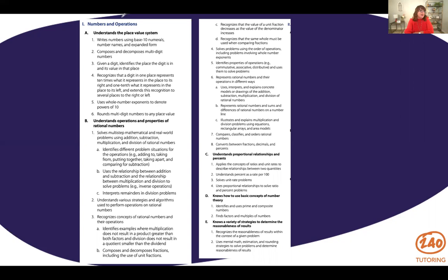Here we're looking at the first standard numbers and operations, and we're looking at all the components. Now what's nice about Praxis for this elementary ed exam is they really explain to you what those standards mean. So we can break that down into 1A understands the place value system, 1B understands operations and properties of rational numbers, 1C understands proportional relationships and percents, D knows how to use basic concepts of number theory, and E knows a variety of strategies to determine the reasonableness of results. I've heard some students say, this is just too overwhelming. It's too much to look at. But what's nice about this is they give you the breakdown. I really like what they've done with the standards here. You can see exactly what you need to know to be prepared under this topic.